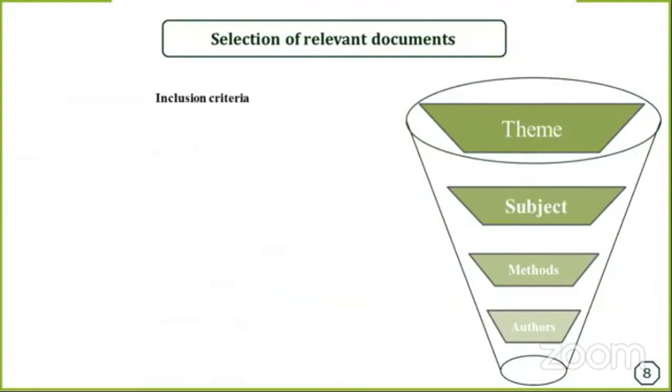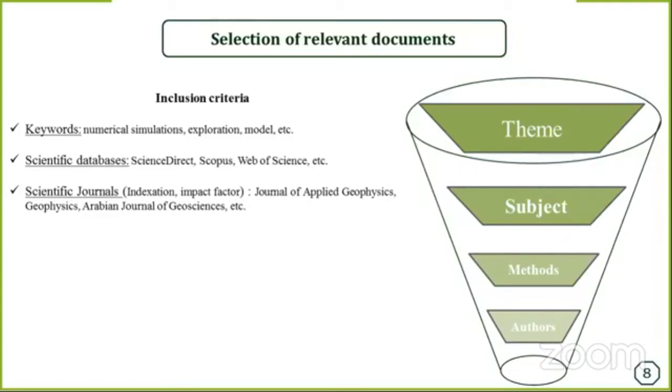After screening our references, we need to define what we call inclusion and exclusion criteria of the collected documents. For my topic, I will define a set of keywords. The keywords are the first criteria that allow us to decide if we will take a reference into consideration or not. I'm not going to search in any databases; I need to identify scientific databases that are related to my research topic and field. Another important criterion is scientific journals in which we are going to look for documents. In narrative literature review, we are not obliged to define all these details, but in systematic literature review, we need to follow a strict protocol.